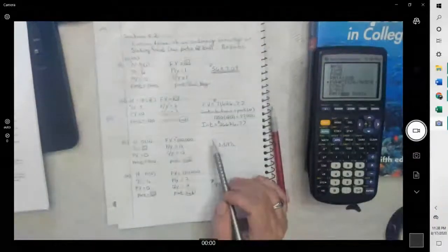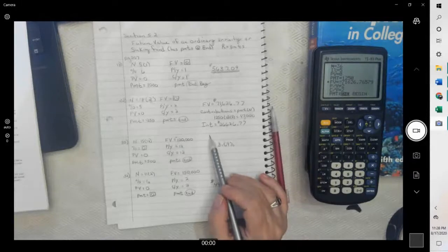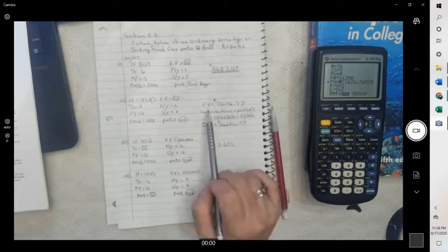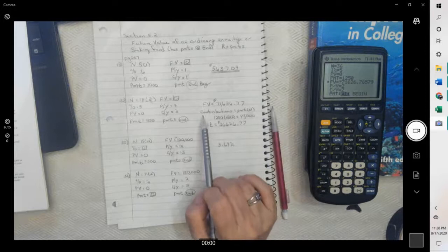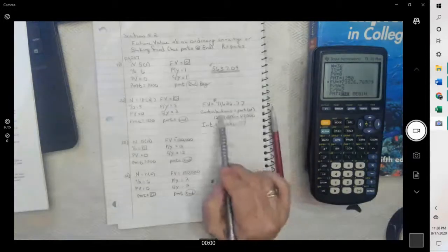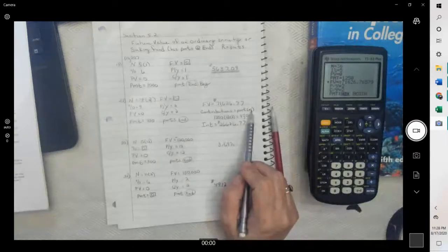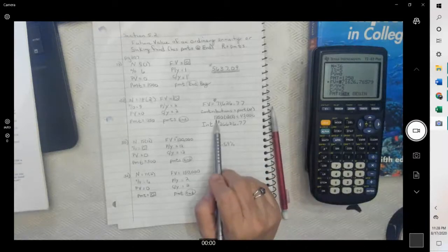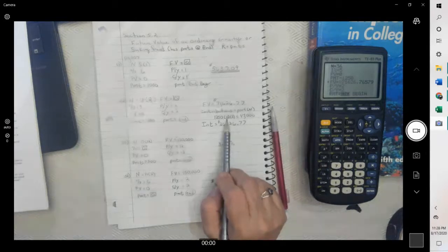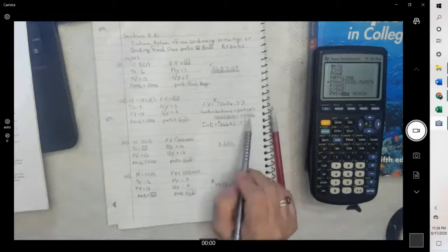Also I want to know the interest that we made. To find the amount of interest we made, you take contributions first. These contributions are your payments times your N. So if we take payments, 1250 times N, which was 18 times 2, we actually put $45,000 in there. That's what we contributed.